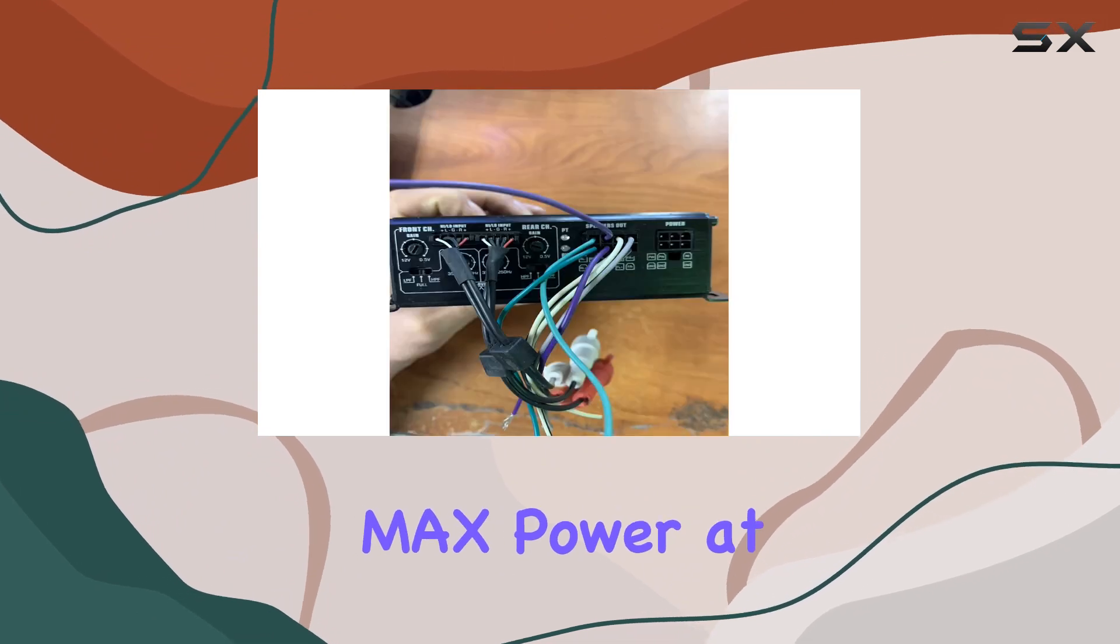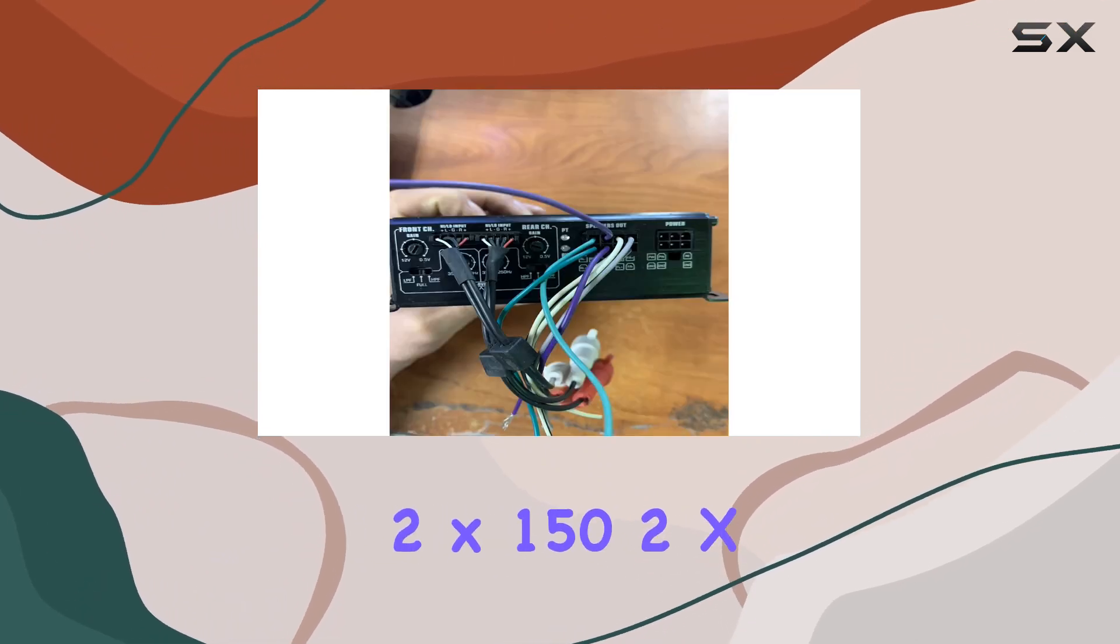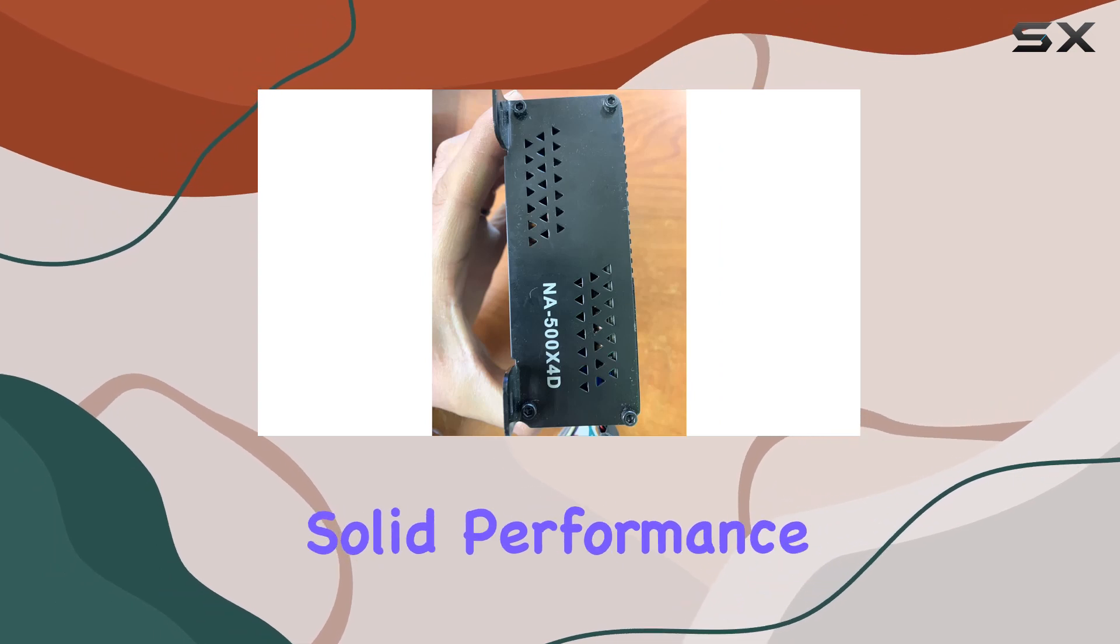Bridge RMS max power at 4 ohms reaches 2 x 152 x 300W, delivering solid performance.